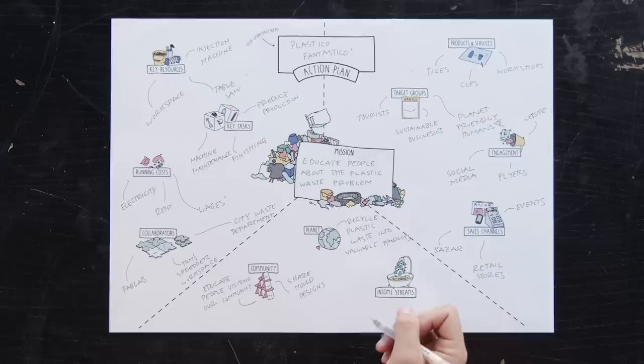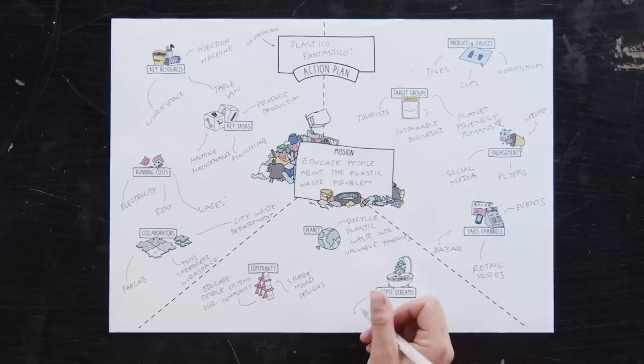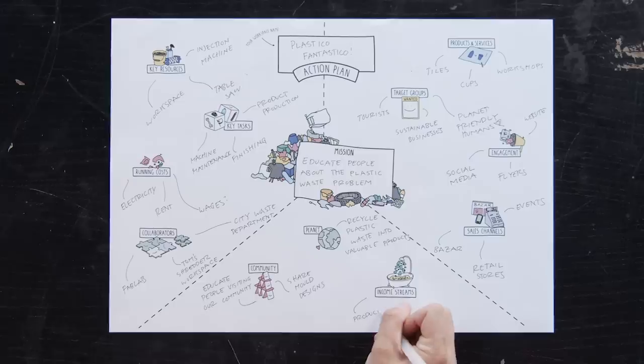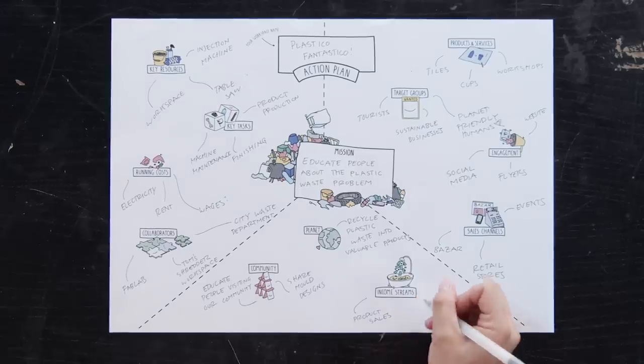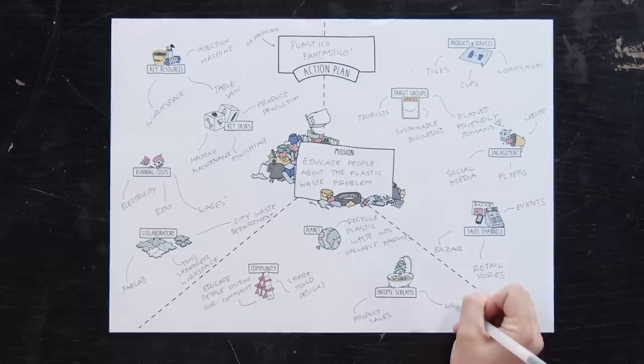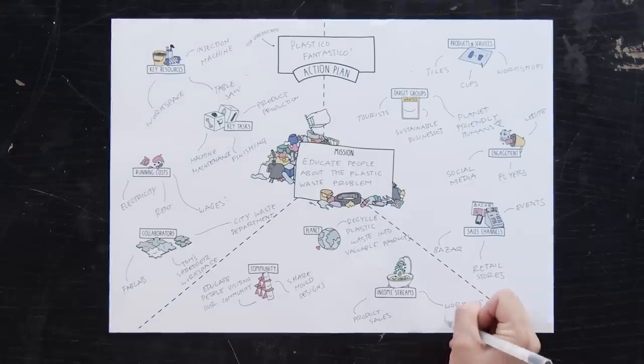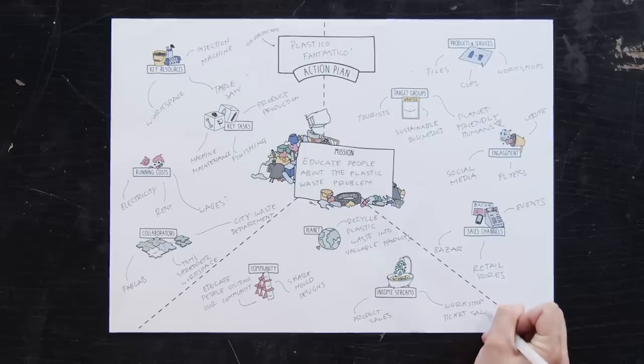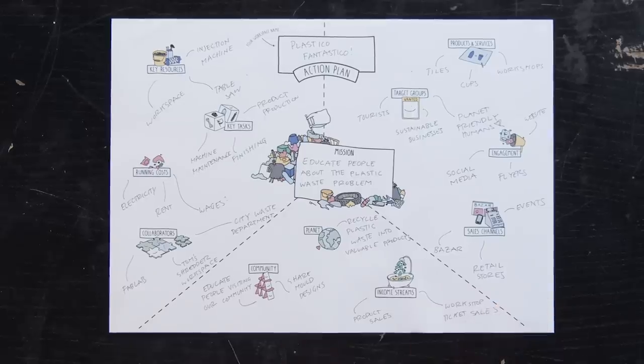The last section is your income streams, or all the ways that you plan on bringing in income to your business. This isn't your startup or investment money, but all the ways that you'll be bringing in revenue month after month once you're up and running. Is it product sales, hourly machine maintenance fees, or workshop ticket sales? Try to narrow it down here to the sources of revenue that you think are most realistic. You can always add additional sources of revenue as you develop.